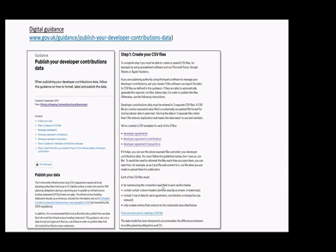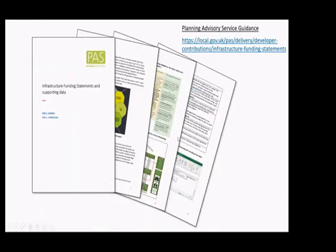Also in parallel with the PPG guidance, we publish digital guidance which gives more technical details on producing your raw data, which will then inform your infrastructure funding statements. When you go into the document, you'll see some links which allow you to download templates of the CSV files. Recognising this all looks very complicated, MHCLG have been working closely with the Planning Advisory Service to produce more user-friendly step-by-step guidance to help in both the production of infrastructure funding statements and the preparation and publication of CSV files — the raw data which the government can then collect nationally. This web address will be populated very shortly; at the time of recording, publication is imminent.